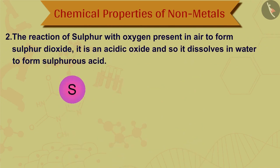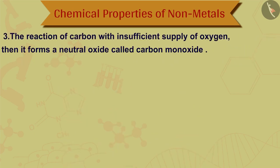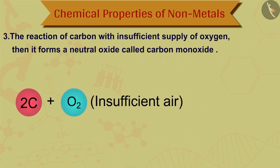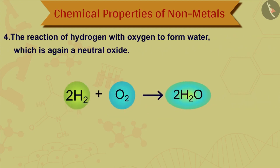The reaction of sulfur with oxygen present in air forms sulfur dioxide. It is an acidic oxide, and so it dissolves in water to form sulfurous acid. The reaction of carbon with insufficient supply of oxygen forms a neutral oxide called carbon monoxide. The reaction of hydrogen with oxygen forms water, which is again a neutral oxide. H2 + O2 results in H2O.